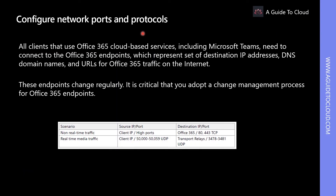For Teams to function correctly, you must open TCP port 80 and 443, and UDP port 3478 through 3481. The TCP ports are used to connect to web-based content such as SharePoint Online, Exchange Online, and Teams chat services. Plugins and connectors also connect over these TCP ports. The four UDP ports are used for media such as audio and video to ensure they flow correctly.